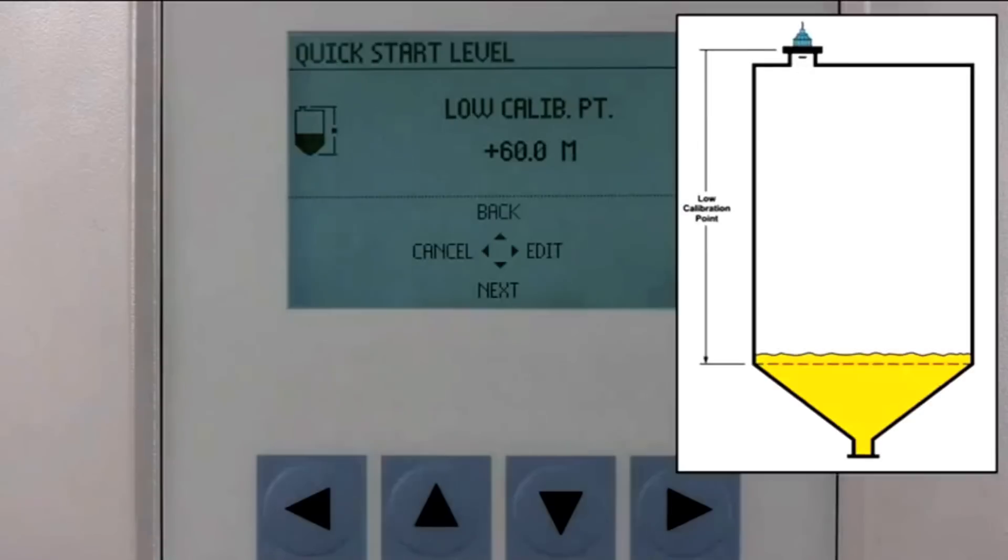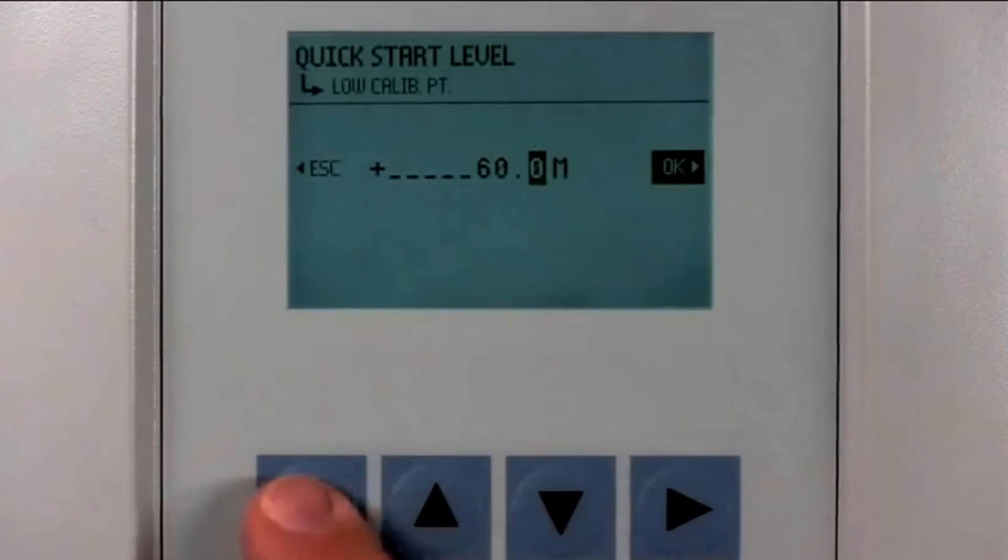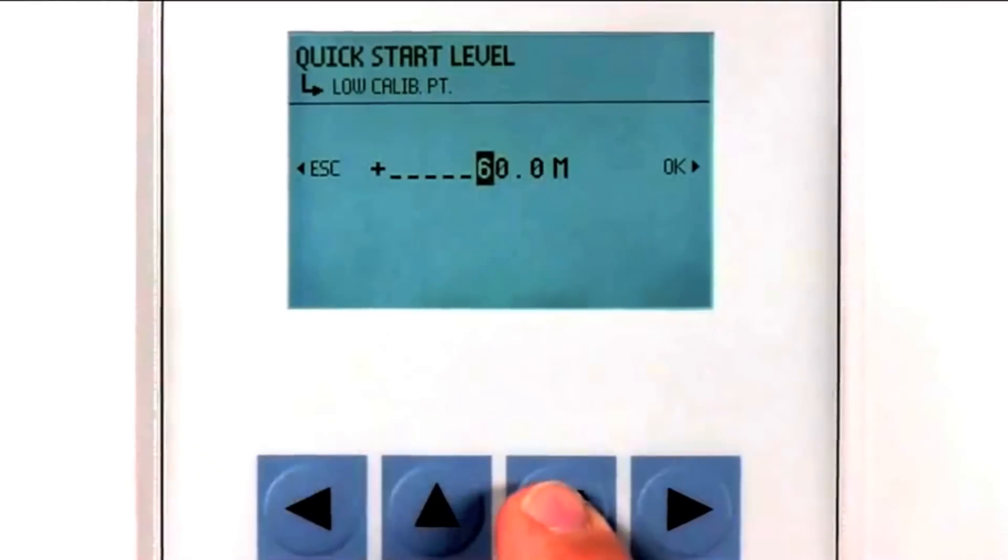The low calibration point is the distance from the transducer to the lowest material level under normal operating conditions. We will enter a value of 4.2 meters in this parameter.